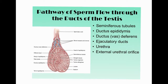This process begins in the seminiferous tubules, where meiosis actually occurs. This is where spermatogenic cells differentiate to become unique individual sperm cells through the process of meiosis.